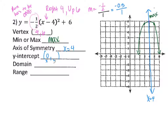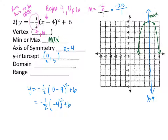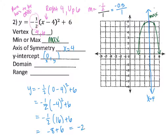I plug in 0 for x: negative 1/2 times (0 minus 4) squared plus 6. Inside the parentheses first: 0 minus 4 is negative 4. Negative 4 squared is 16, because negative 4 times negative 4 gives positive 16. Now multiply negative 1/2 by 16 — change 1/2 to a decimal or just ask: what's half of 16? That's 8. So negative 8 plus 6 gives negative 2. So y equals negative 2.